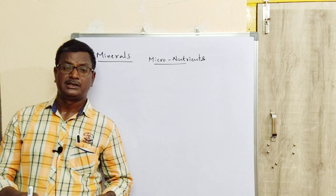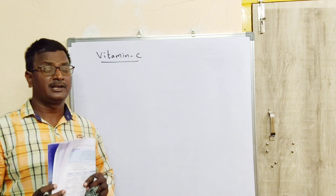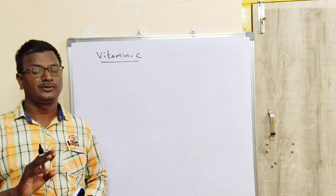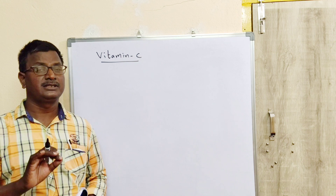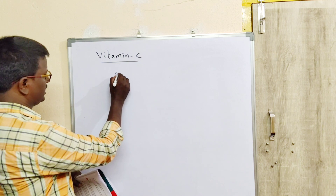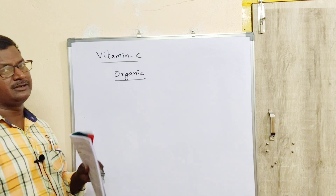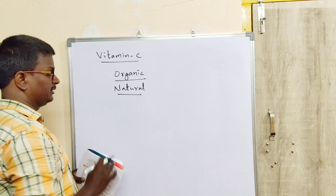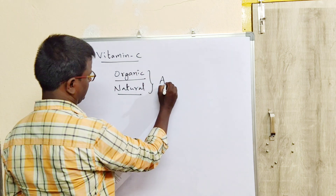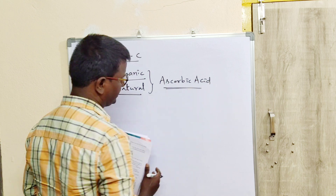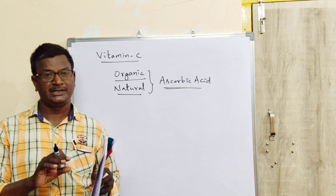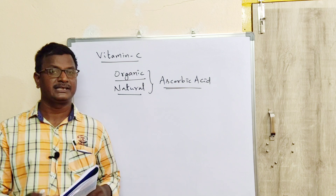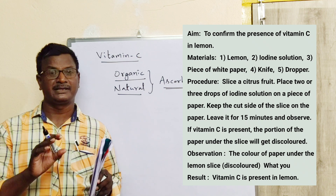Next, we will discuss the test for vitamin C. Vitamin C is an organic acid available in fruits like lemon, orange, and guava — all sour-tasting fruits are rich sources of vitamin C. The chemical name of vitamin C is ascorbic acid. It is also called anti-scurvy vitamin because it prevents scurvy disease.